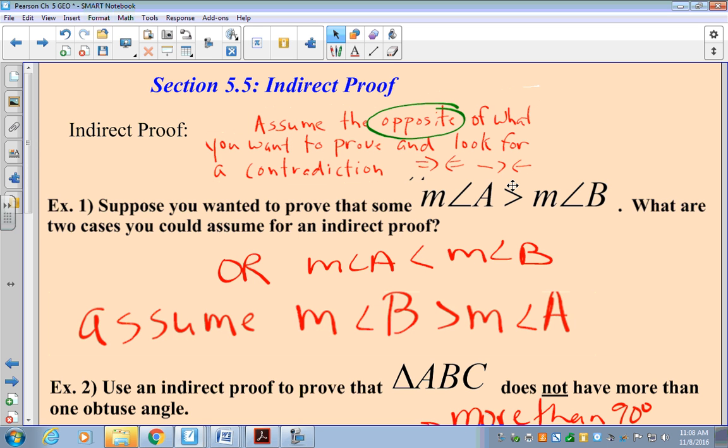So an indirect proof is when we assume the opposite, an opposite is circled, of what we want to prove and look for a contradiction. The symbol for contradiction is a double arrow facing each other.